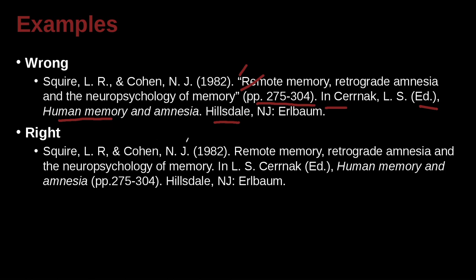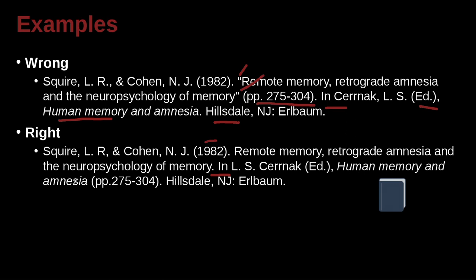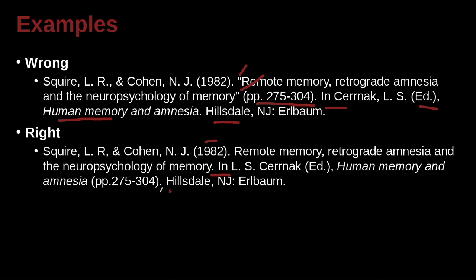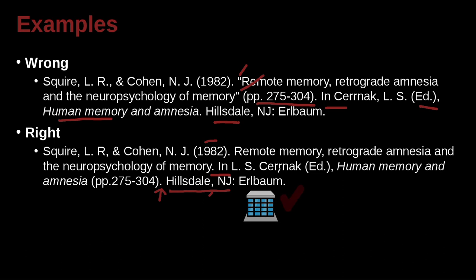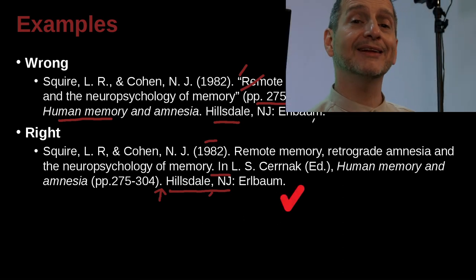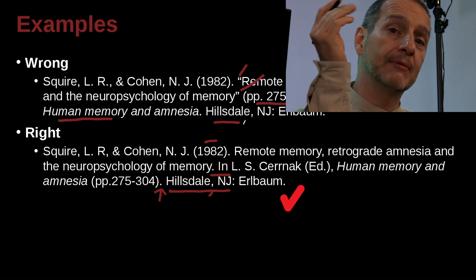The authors of the chapter — that looks good. The year of the book's publication. Then the title of the chapter: remote memory, retrograde amnesia — that all looks good. Then here we have a period, and then the word 'in' followed by L.S. Cernak — he's the editor — comma. Then the book name, Human Memory and Amnesia, and then the pages from 275 to 304, and a period. Then we've got the location — a city and a state in the United States — colon, and then the publisher's name. This has a very specific flow to it, a very specific way. Complicated, and it's not something easy to remember off the top of your head. But once you get the structure correct, I think you can do that every time.